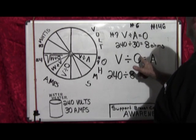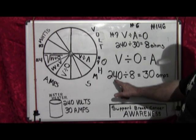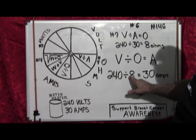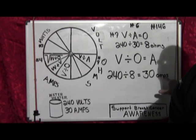So we take volts divided by ohms, which gives us amperage. 240 divided by 8 equals 30 amps.